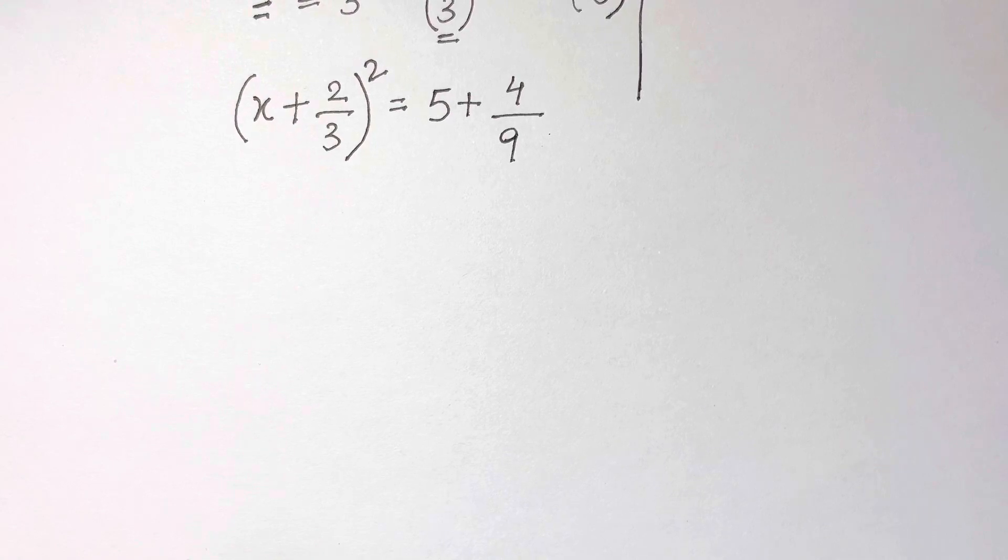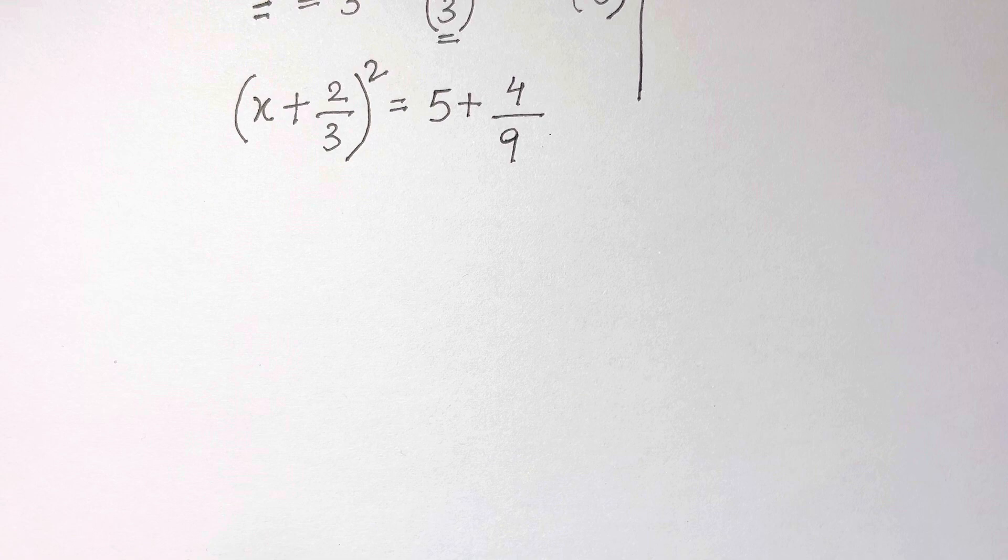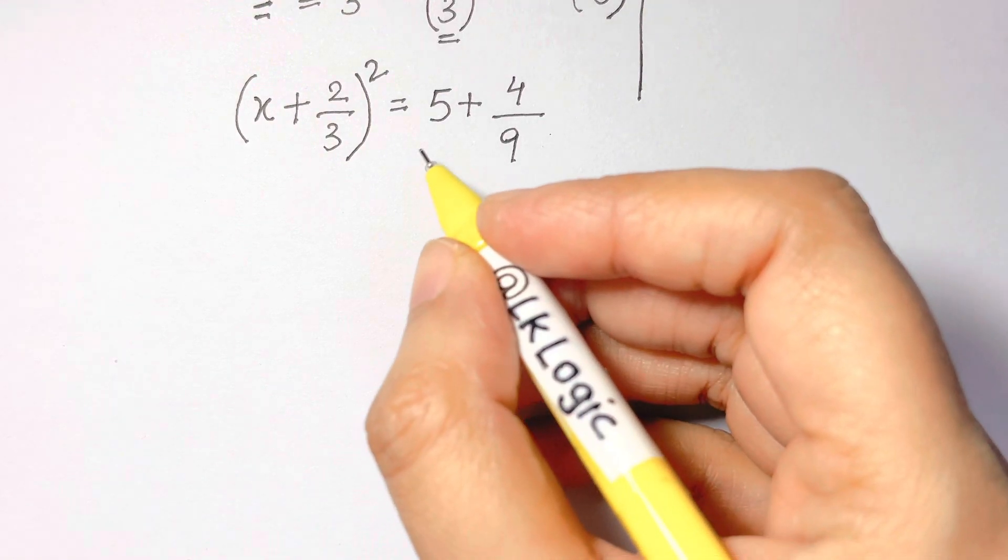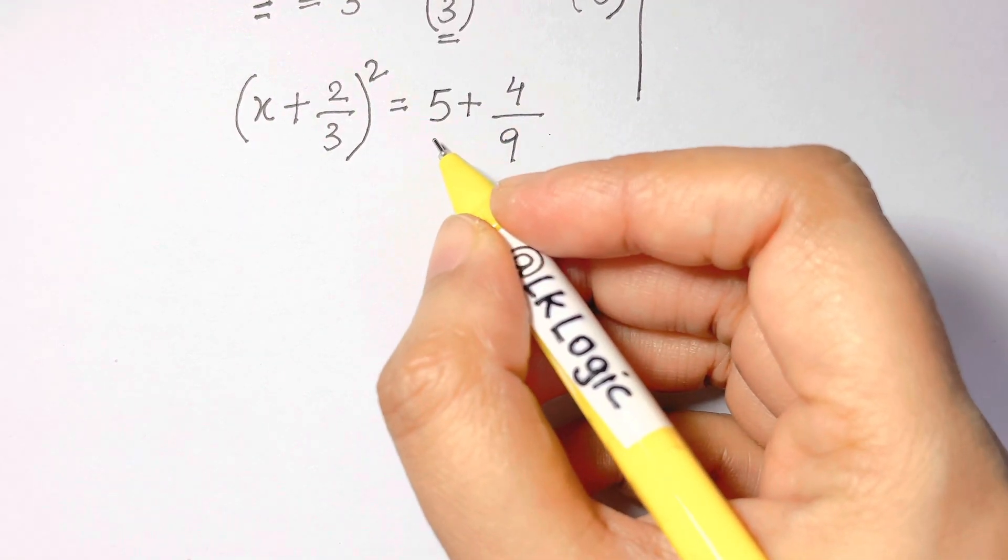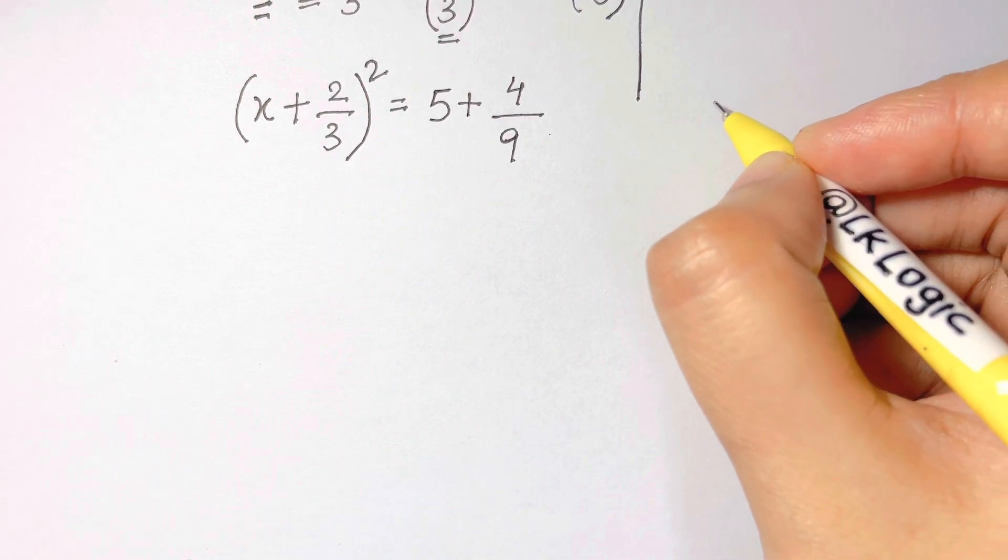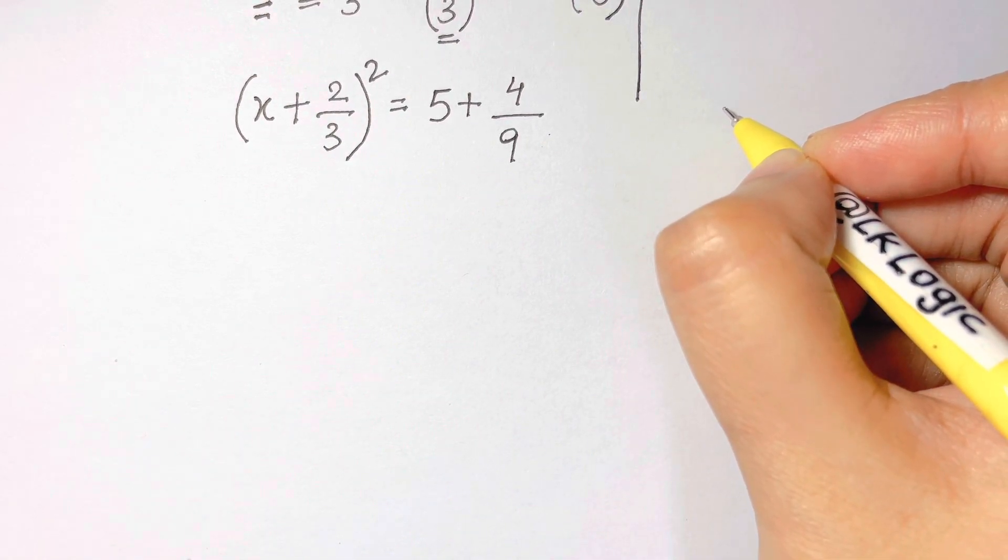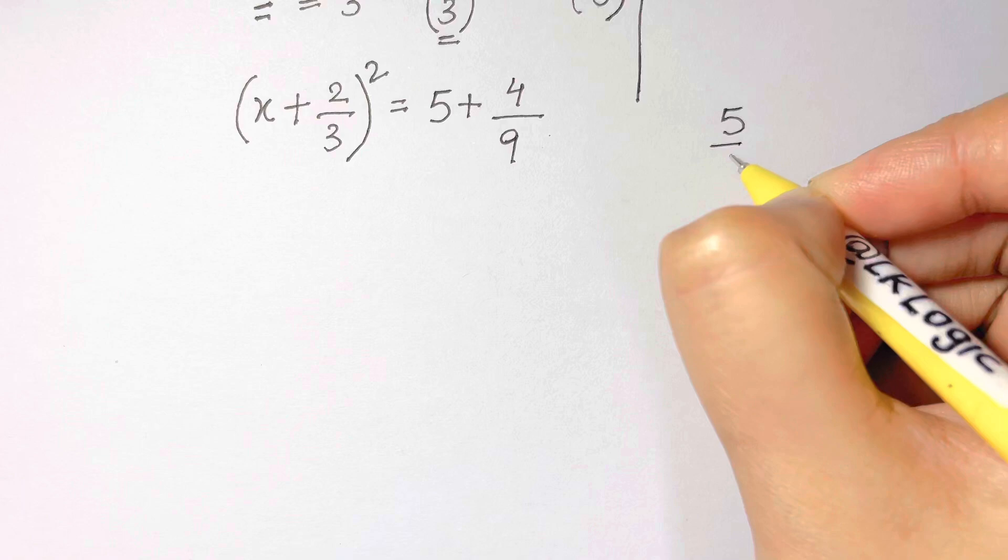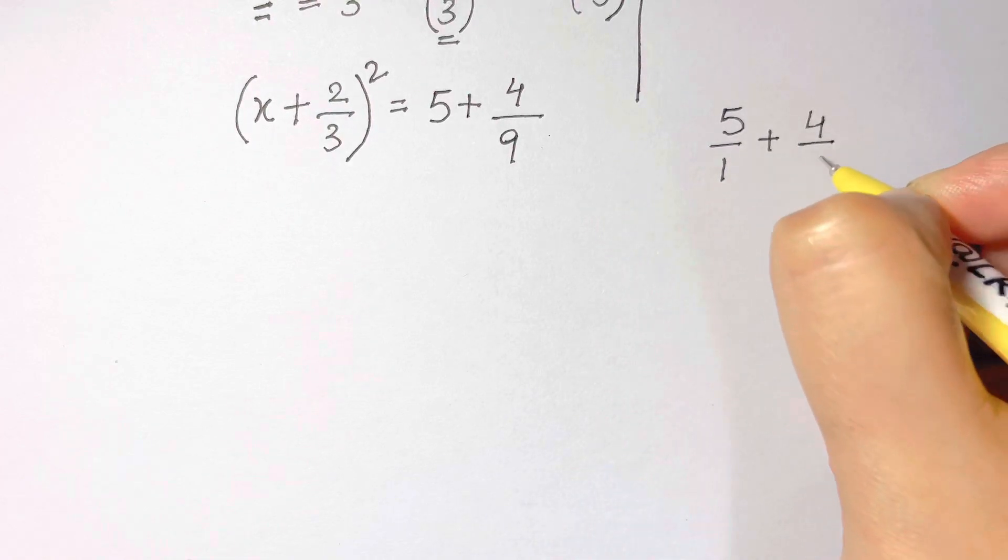Therefore, we have (x + 2/3)² = 5 + 4/9. The next thing is I want you to add these two quantities. Let's write 5 as a fraction with denominator of 1, so 5/1 + 4/9.